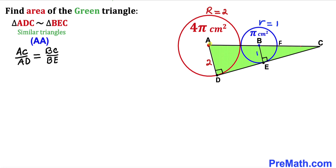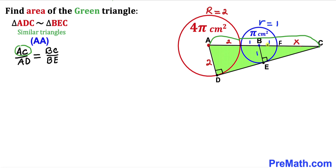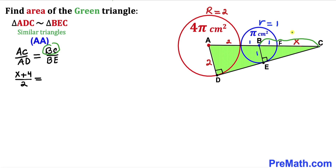AD is the radius of the big red circle, so AD = 2. BE is the radius of the small blue circle, which is 1. Let's call the line segment FC as x centimeters. The AC length is 2 + 1 + 1 + x, which gives x + 4. So the proportion becomes (x + 4) / 2 = (x + 1) / 1, where BC = x + 1 and BE = 1.